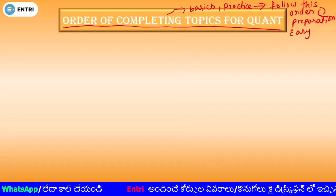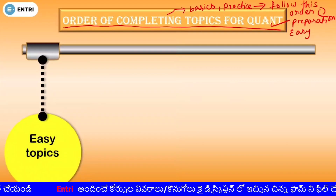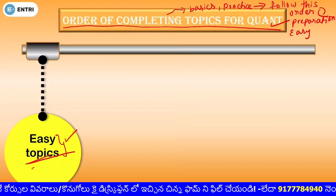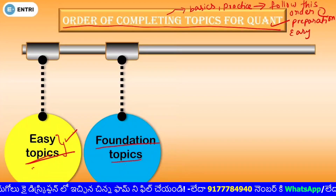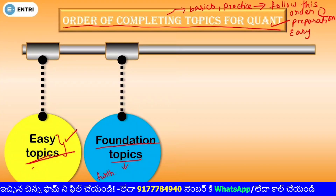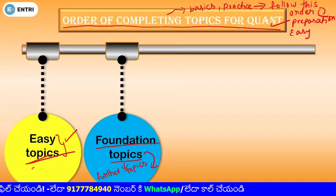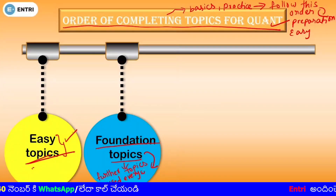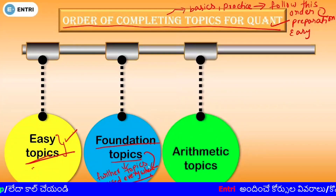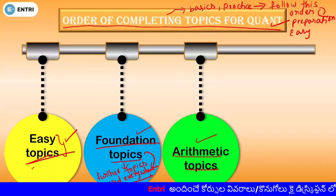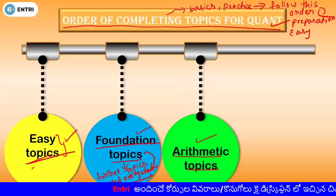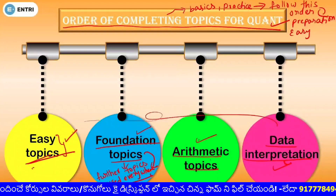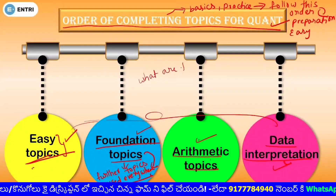These topics will be very easy to apply in this order. We have easy topics in this order. First, we will complete the easy topics. Next, we have foundation topics — we will solve them as foundation topics to help with further topics. That's why we have laid the foundation topics first. Next, we have arithmetic topics. We will solve arithmetic topics simply first, then it will be easy to find data interpretation. The last three topics we will solve easily.